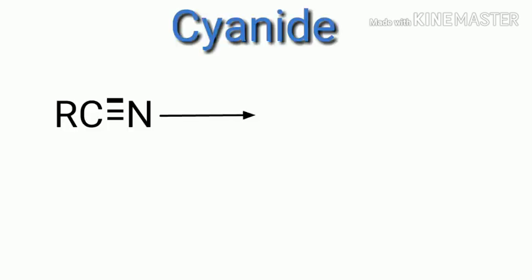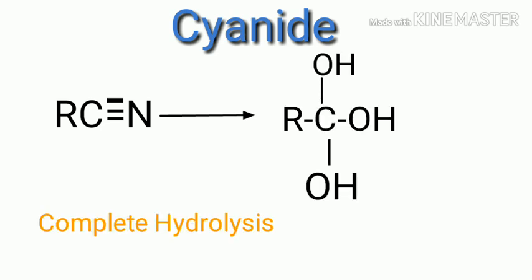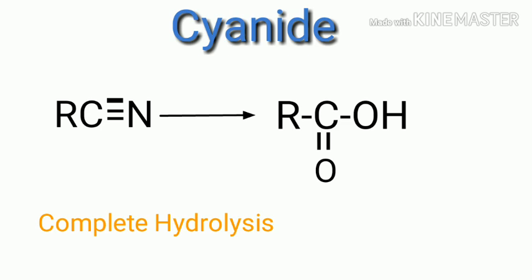Now it is cyanide. In cyanide there is a carbon-nitrogen triple bond. The OH⁻ will attack and this will be complete hydrolysis. The intermediate with three OH on carbon is very unstable, so H₂O is eliminated, and finally we will get an acid as a product, which will be RCOOH.